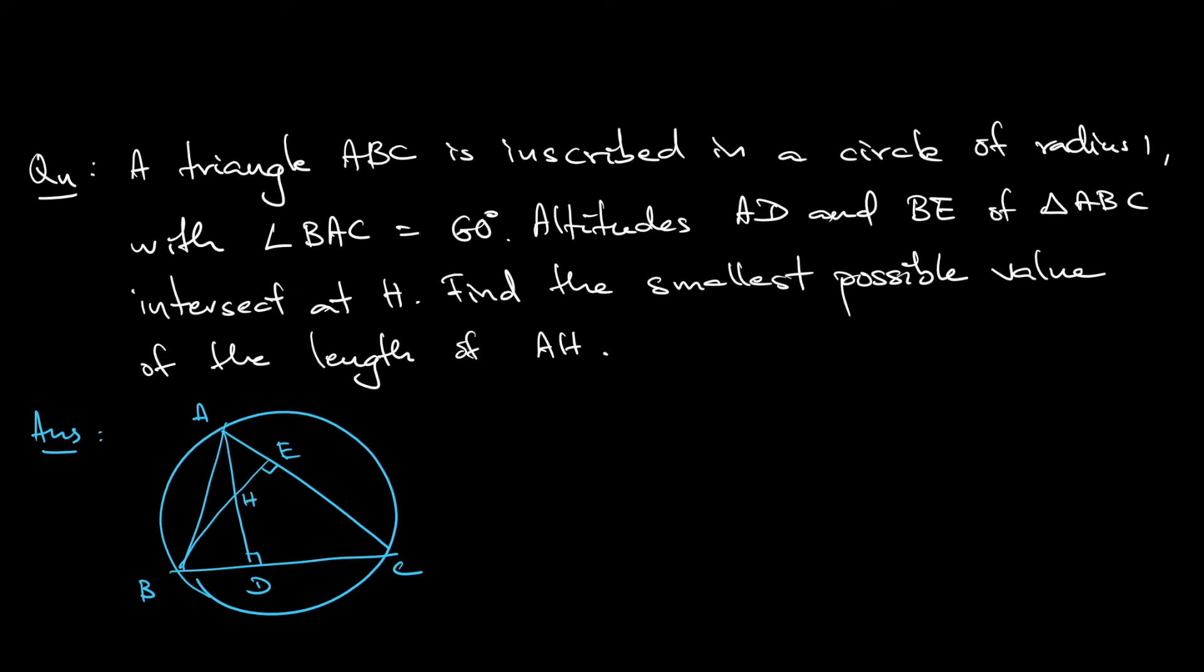So the question asks, what is the smallest possible value of the length of AH given that the circumradius is 1.